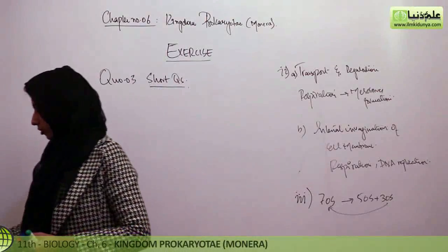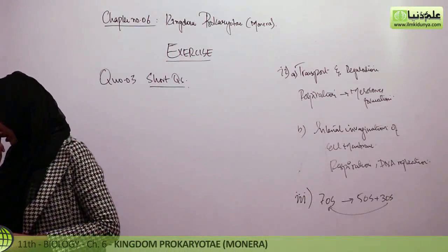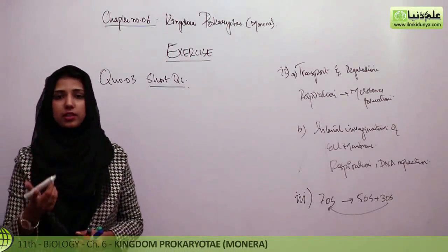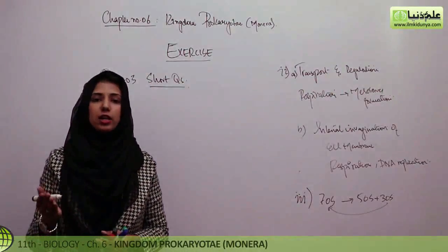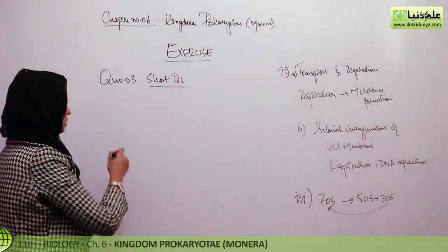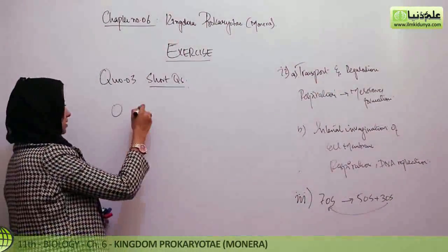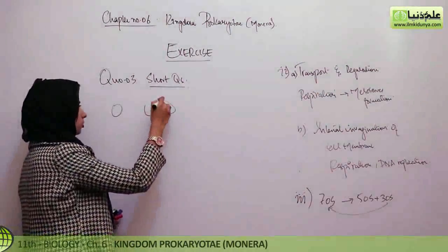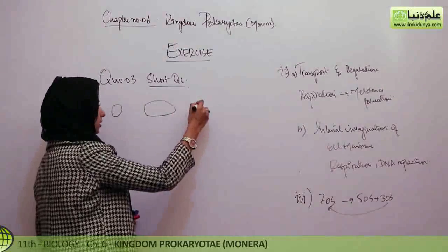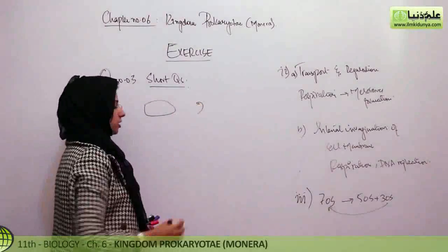Fourth question: draw the three bacterial shapes. The three bacterial shapes are: cocci — round; bacilli — rod-shaped; and vibrio — actually comma-shaped.